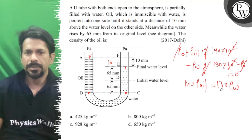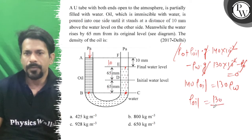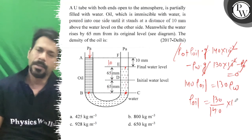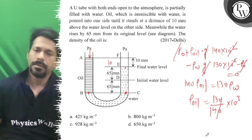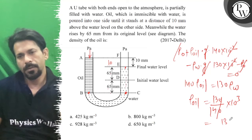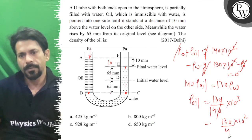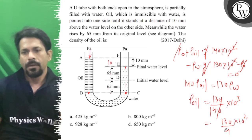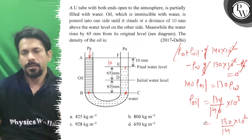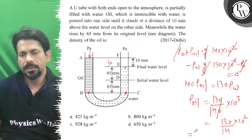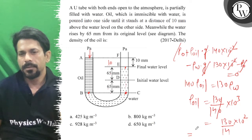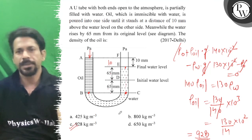So the density of oil equals 130 upon 140 into 10 to the power 3, which gives 130 × 10 squared upon 14. Calculating this, we get 928 kg/m³. So option C is correct. All the best.